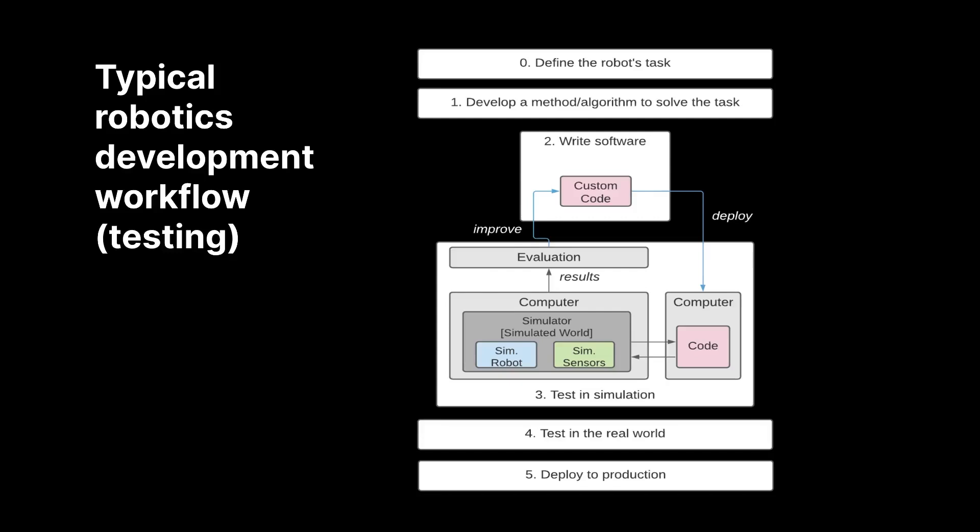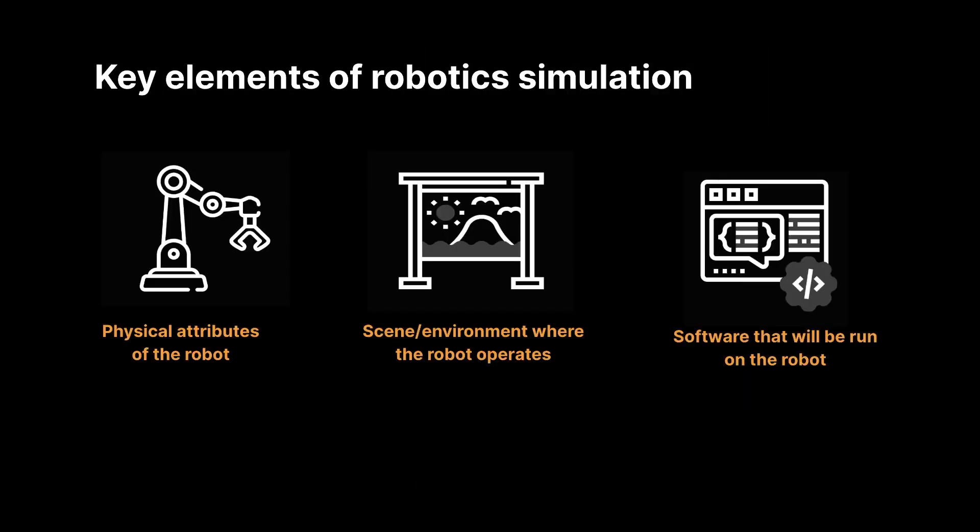What does testing with a simulation look like? First we need to define the robot's task — what is the robot supposed to do? Then we need to develop a method, algorithm, or approach for how the robot will solve that task. Then we can write code that will implement that approach. And instead of deploying to a real robot and testing in a real-world environment, we deploy to a simulated robot in a simulated environment. There, we can evaluate the results from the simulation. If it didn't work well, we can update our code and try again very easily until we finally get to an acceptable performance mark where we want a real-world test. So we can deploy to the real robot and evaluate in a real-world scenario. If that test went well, we can go ahead and deploy to production. Thinking back to the robotic cart example earlier, I'm sure this type of workflow would have drastically reduced the number of trips made to the testing site.